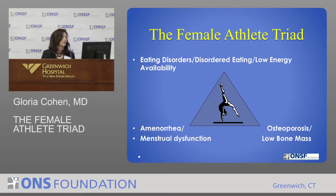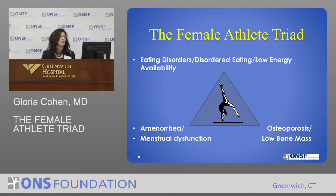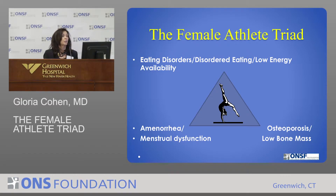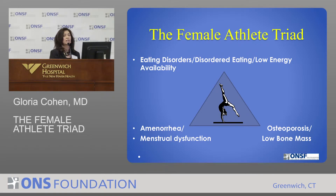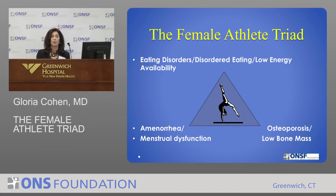Now we're looking at low energy availability — athletes who exhibit traits of the female athlete triad are usually more receptive to accepting this term. Another triangle point is amenorrhea, or loss of periods, going on to menstrual dysfunction, maybe not having the full-blown picture. The third corner is osteoporosis, which has changed in definition to osteopenia — loss of bone mass, but not quite as severe — and now we use the term low bone mass.